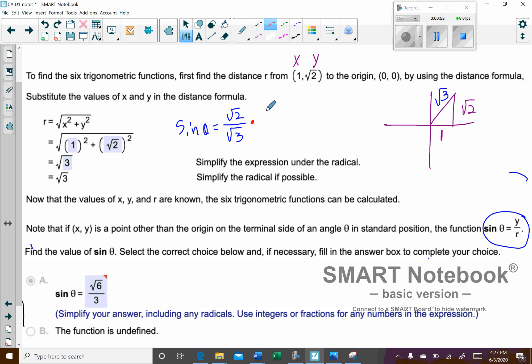So I'm going to multiply this by the number one, but it's going to look very different than the number one. It's going to be square root of three over square root of three. And what I'm trying to do is multiply the denominator by something that will be a perfect square.